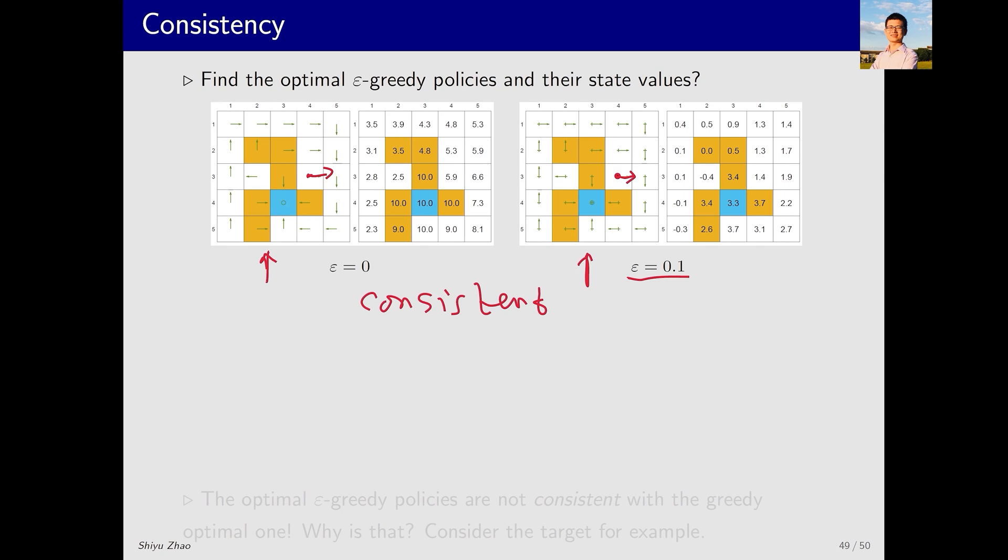This consistency is important because after obtaining the optimal epsilon greedy policy with the MC epsilon greedy algorithm, we intend to apply it in practice. In real world applications, we will convert the epsilon greedy policy into the corresponding greedy policy. And we hope that this greedy policy will match this optimal policy. When epsilon is set to 0.1, this hope becomes reality. Converting it to a greedy policy indeed yields the optimal greedy policy.